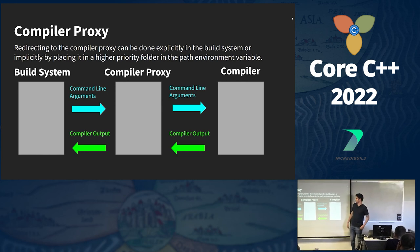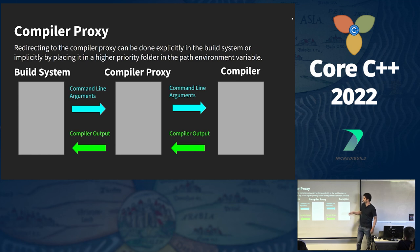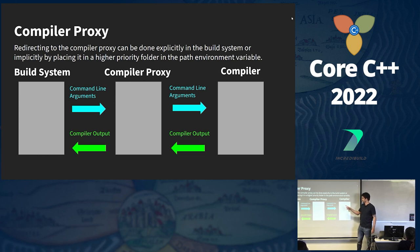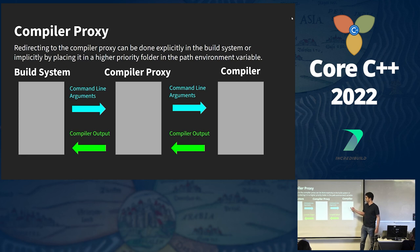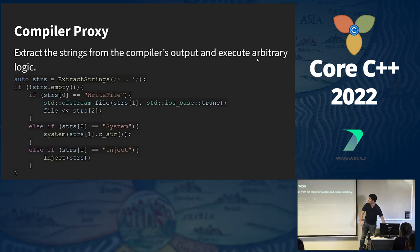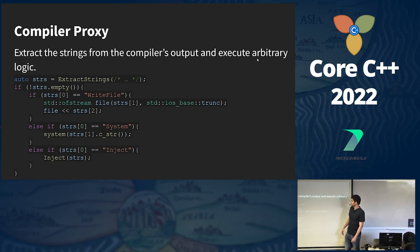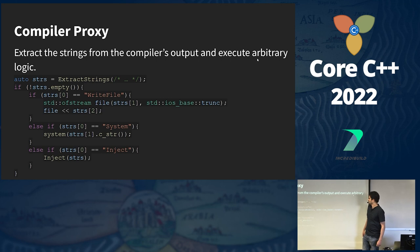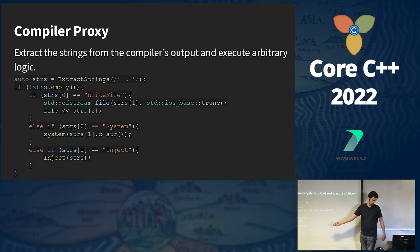A better way is using a compiler proxy. The idea is to have a program sit between the build system and the compiler. The build system invokes the compiler proxy with command-line arguments; the proxy invokes the compiler with the same arguments, listens to the compiler's output, and passes it back to the build system. Redirecting to the compiler proxy can be done explicitly in the build system or implicitly by placing it in a higher-priority folder in the PATH environment variable. Before forwarding output to the build system, it extracts the string and executes arbitrary logic — for example, writing to a file, calling the system function, or injecting the string into another file.